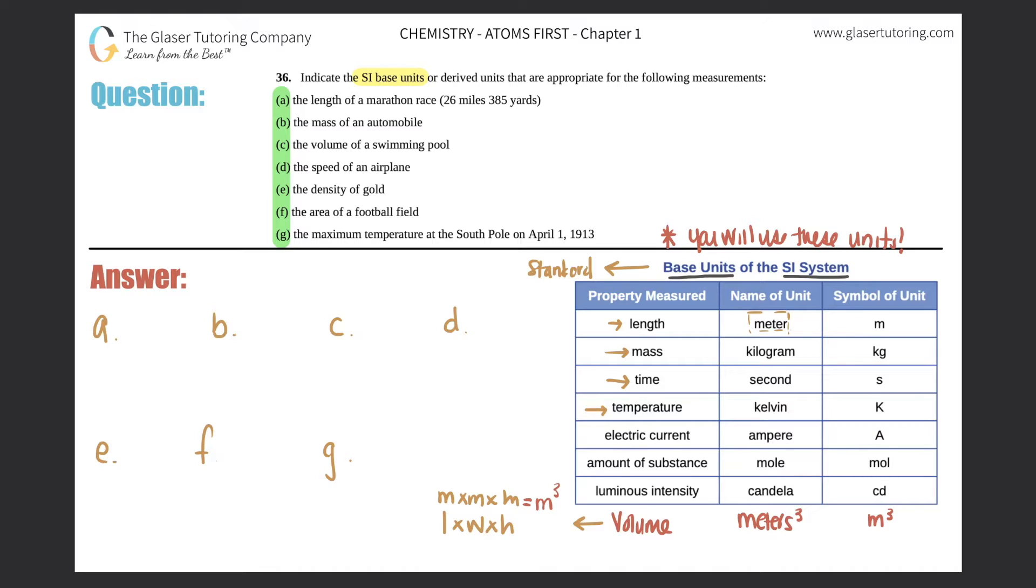And then the last one that they left out is density. Density, the name of the unit would be, actually density would be grams per centimeter cubed. Maybe that's why they didn't put them down, but I think they're important. So just know that density, the standard unit is g/cm³, grams per centimeters cubed.